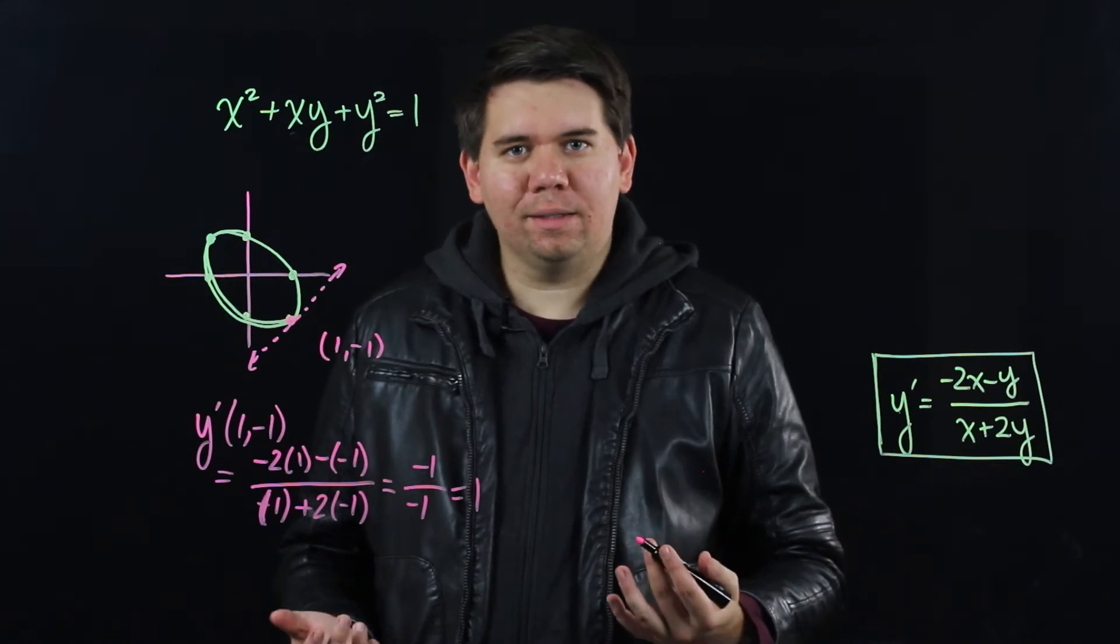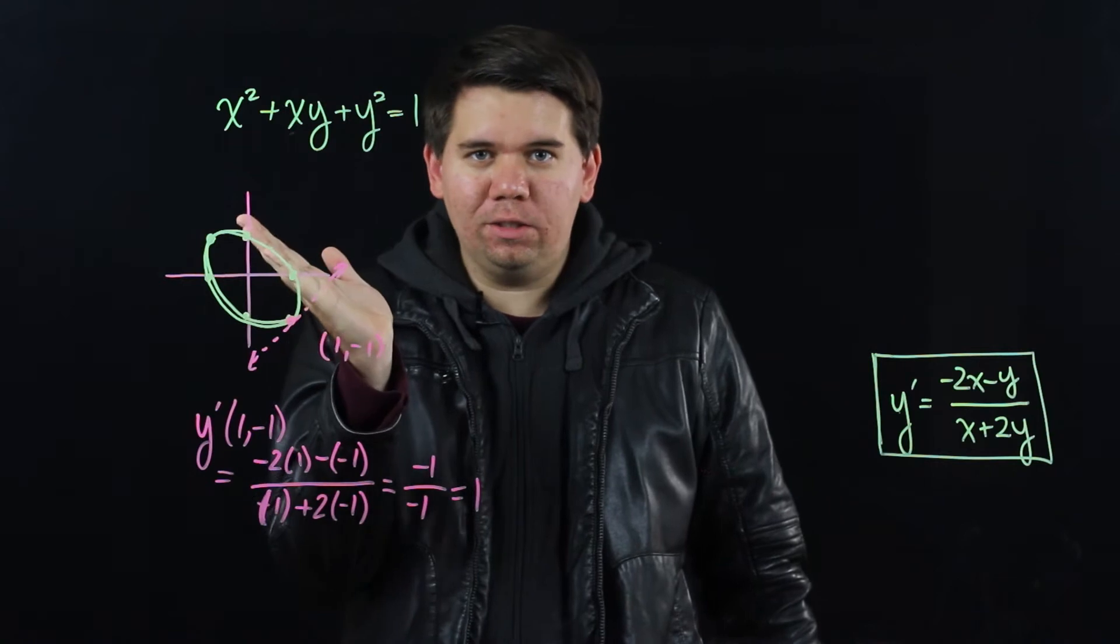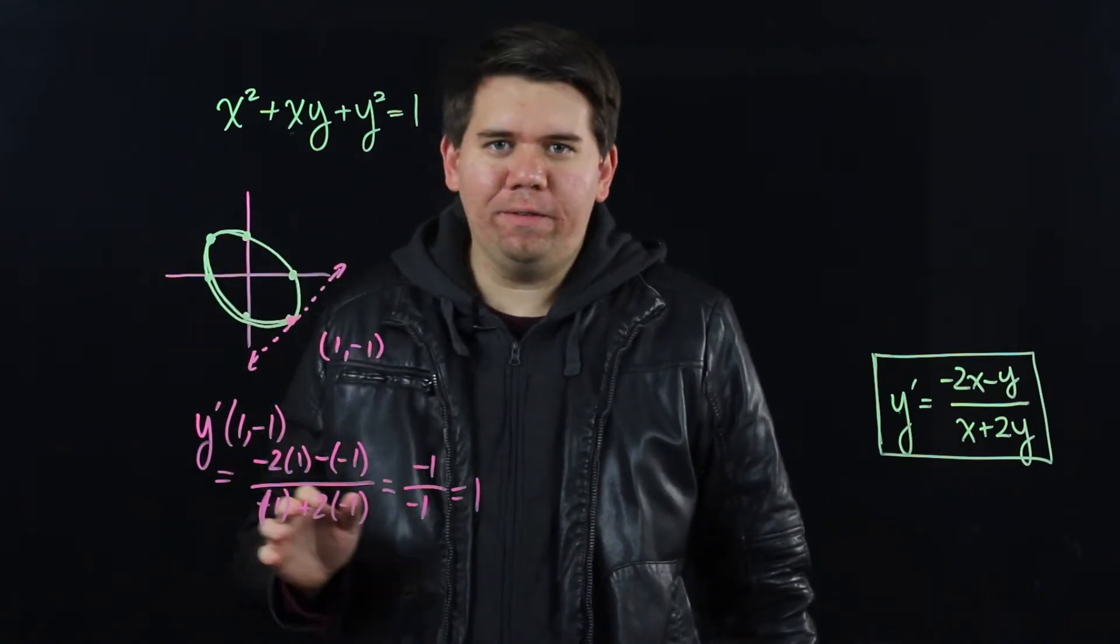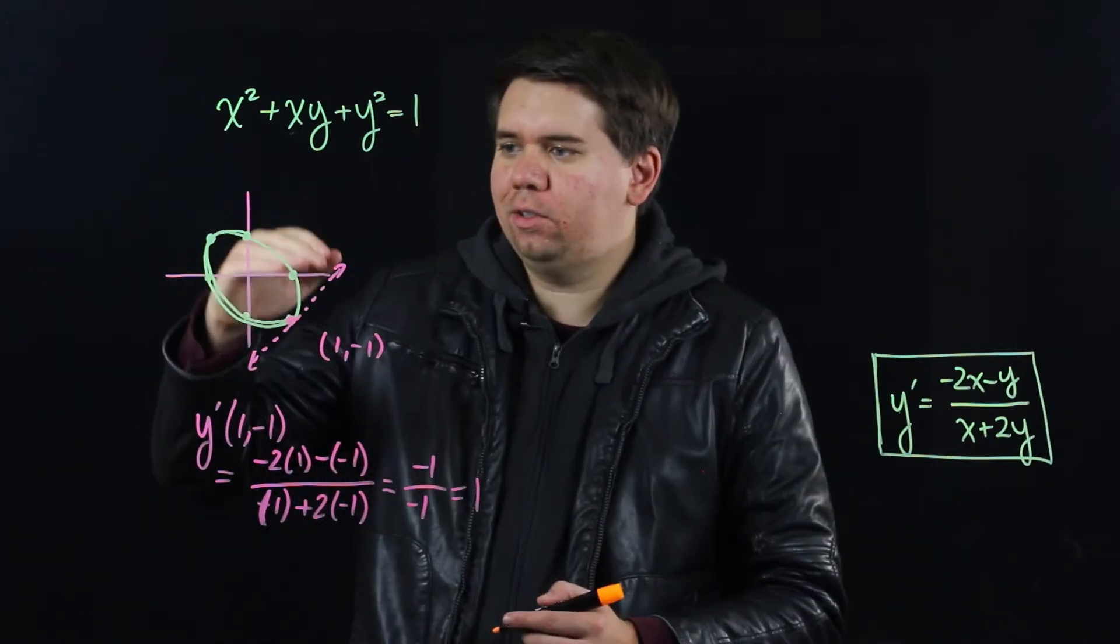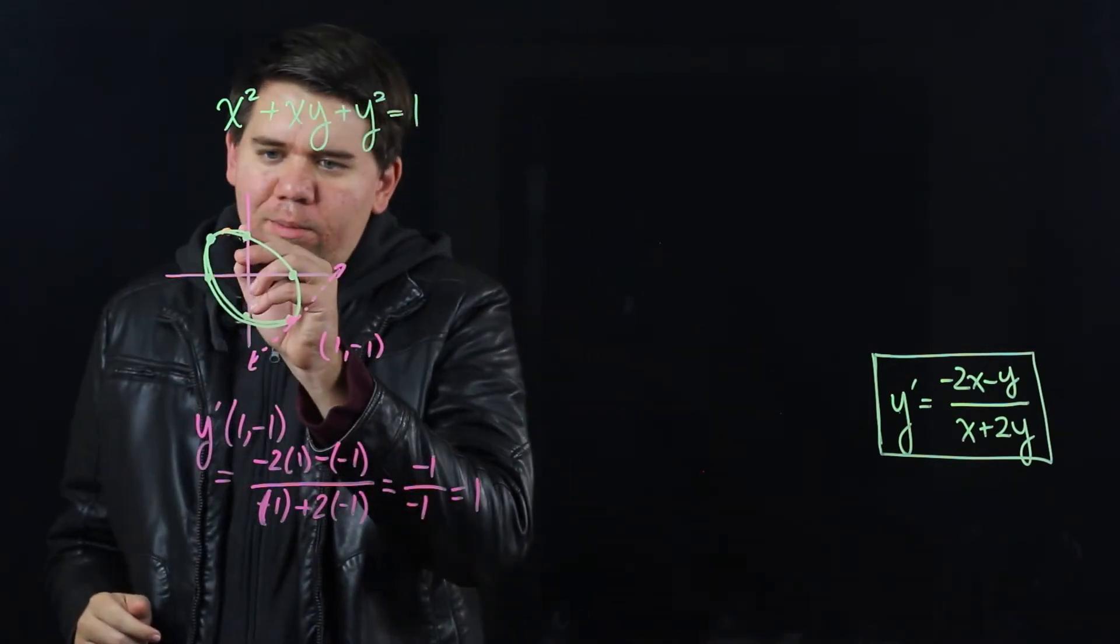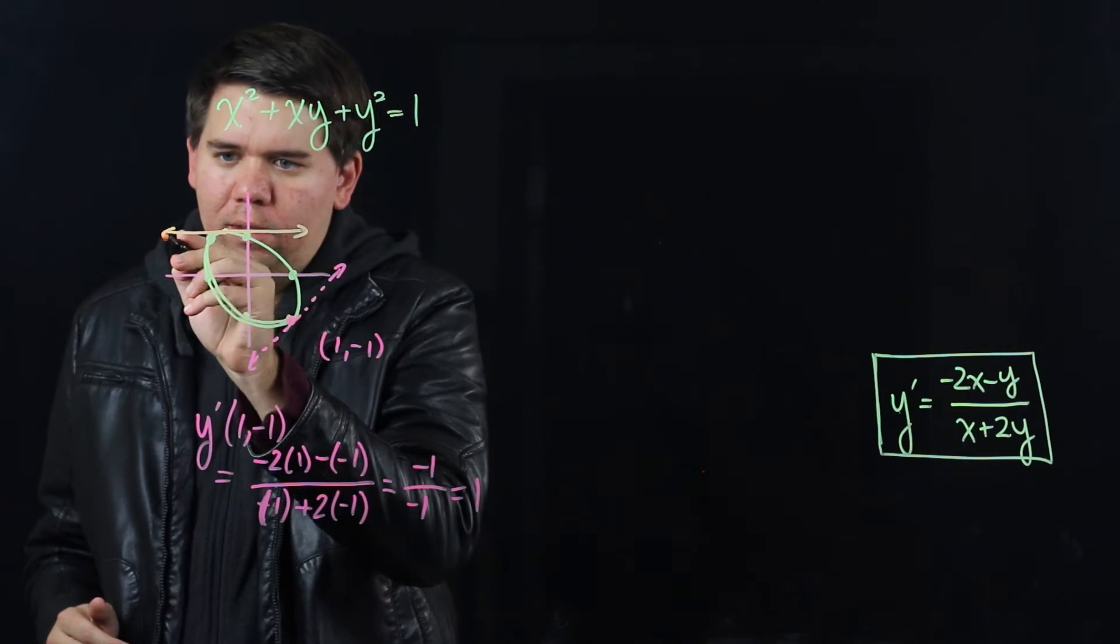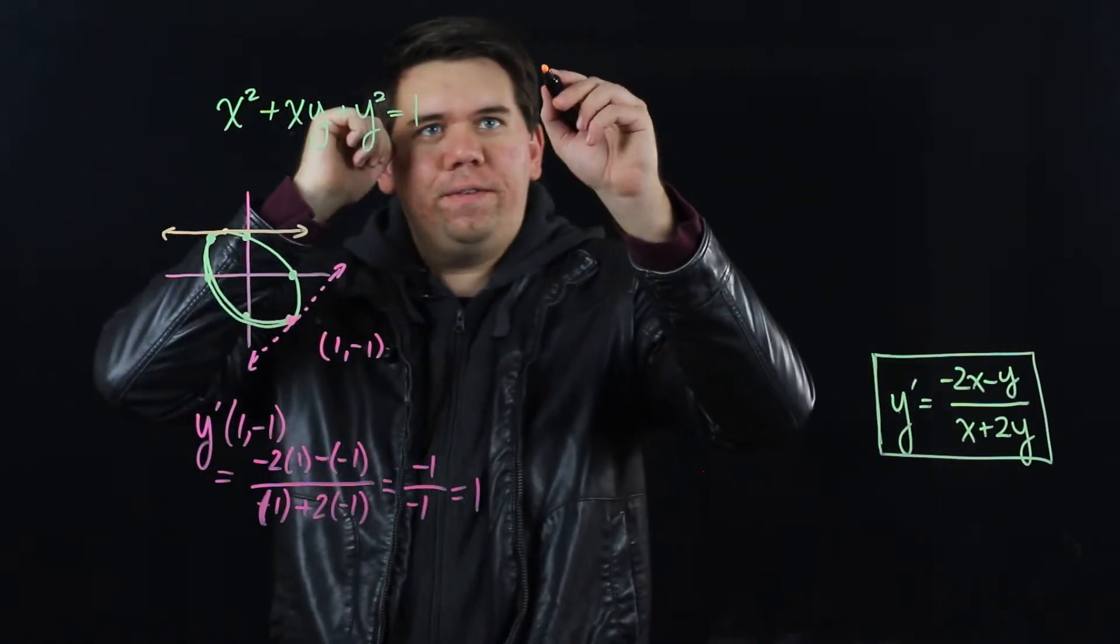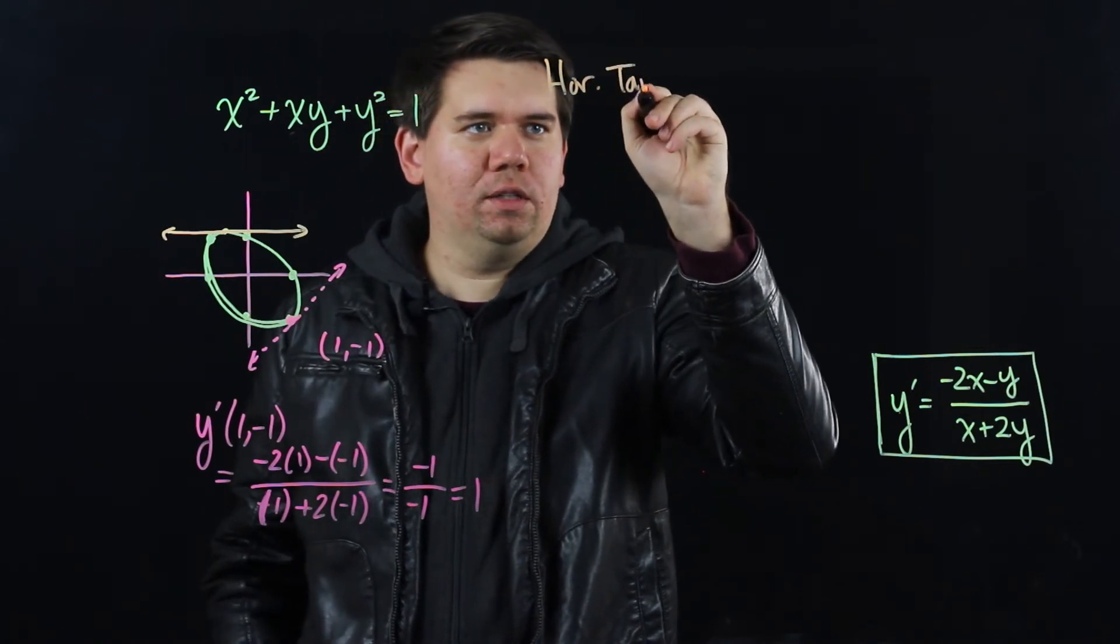There's another question we might ask. Now that we know how to find the slope of the tangent line at any given point, we might ask, where does this graph have, say, horizontal tangent lines? Where are the tangent lines to this horizontal? So for example, right up here on top, there seems to be a point where this tangent line is nice and flat.